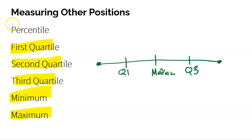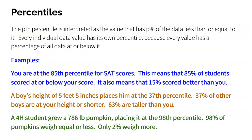Another great way is with a percentile. I'm actually going to link a percentile into all of this by the end of this video. A percentile is a really cool way to tell a value what its position is. The Pth percentile is interpreted as the value that has P percent of the data less than or equal to it. Every individual data value has its own percentile because every value has a percentage of data that is at or below it.